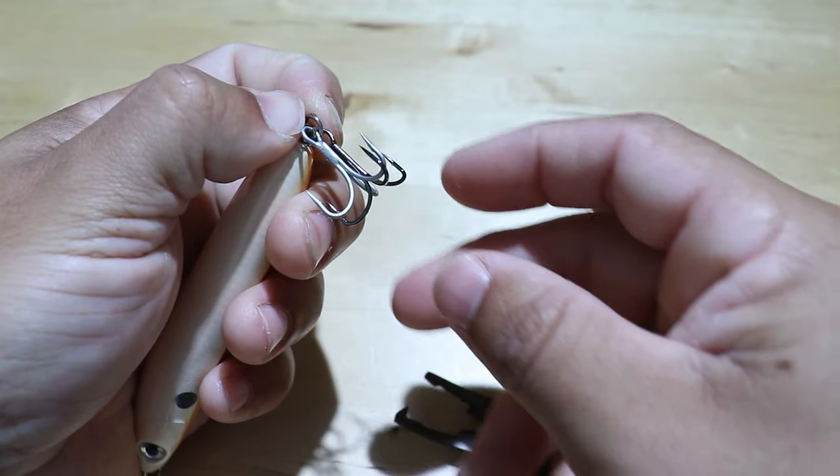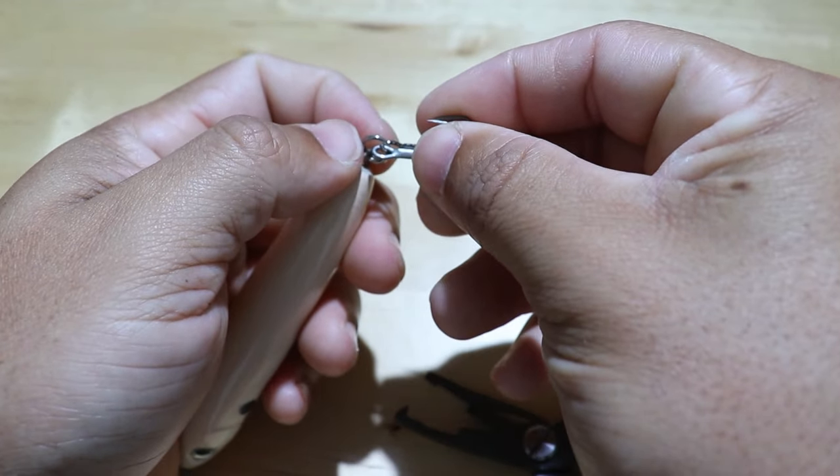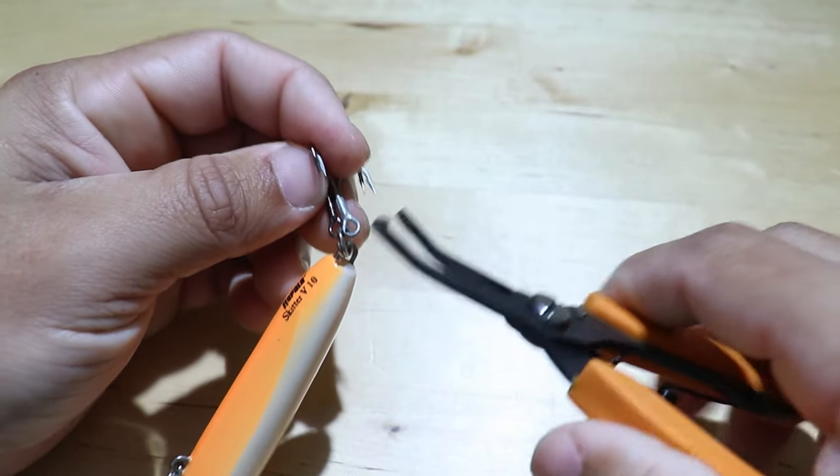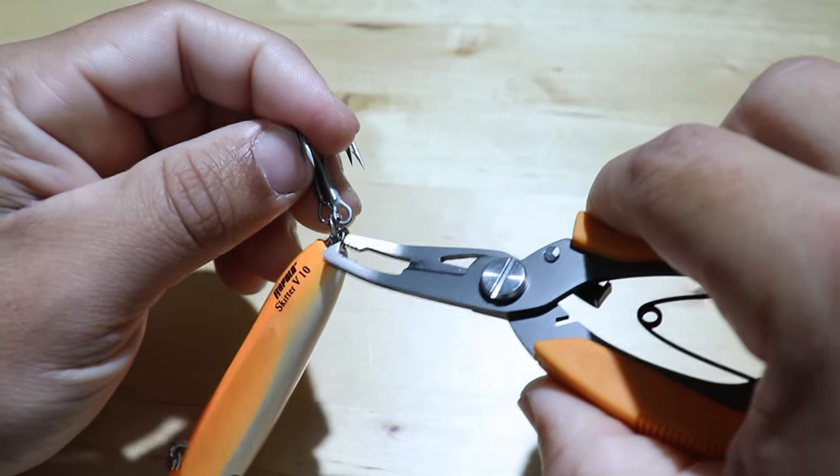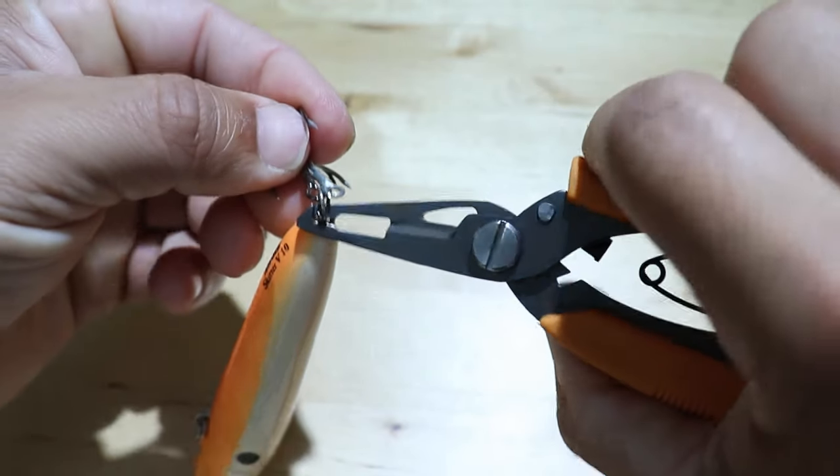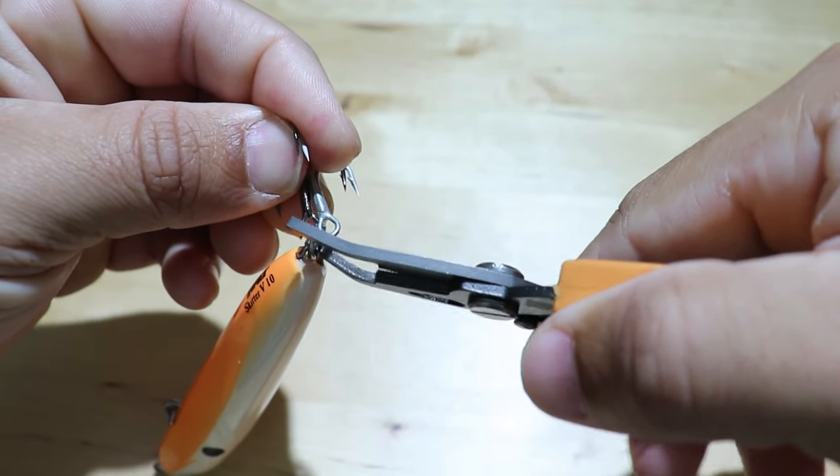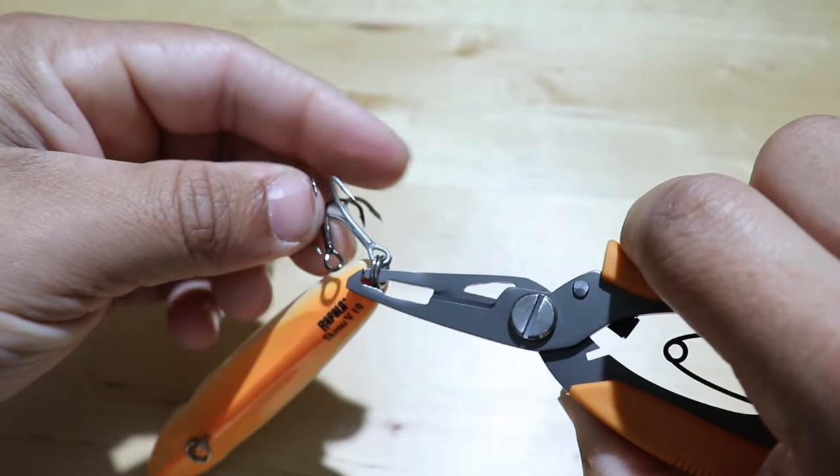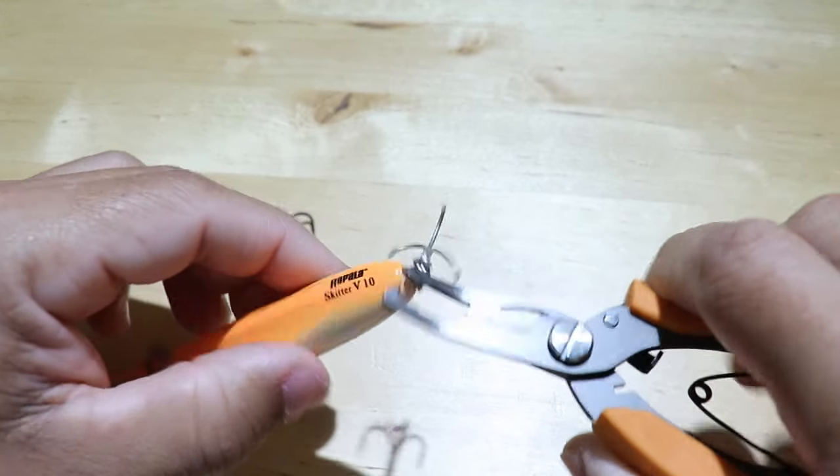If you're doing treble hooks or inline hooks you can squeeze them together, keep them together. Then take your split ring pliers, grab the split ring like so and just start spinning that split ring. One hook is going to come off as the other one goes on as you see there.